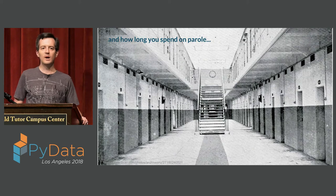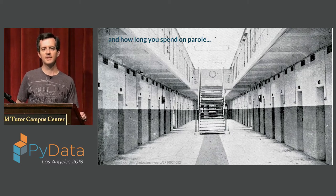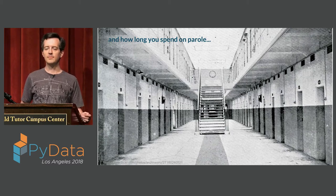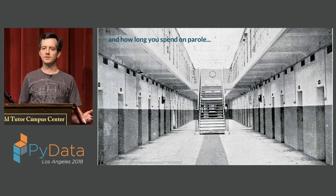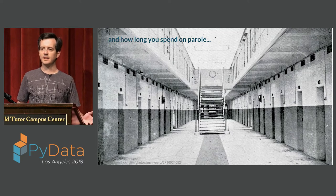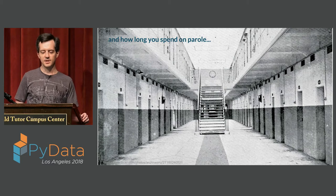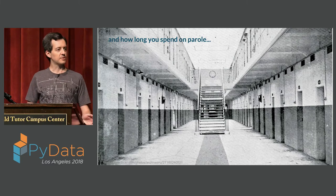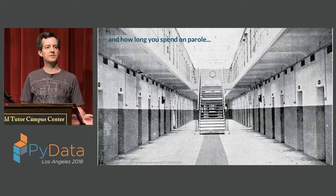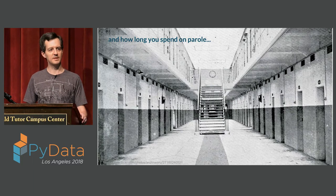There are people who have the hope of taking human bias out of the criminal justice system using models. There's a hope that maybe you can use models to predict how likely somebody is to commit future crimes, and that you can be simultaneously more fair and more accurate. These models are getting used all across the country today to make decisions about whether people go to jail and whether people get parole.